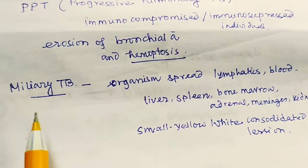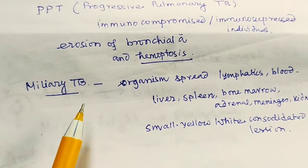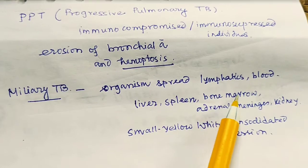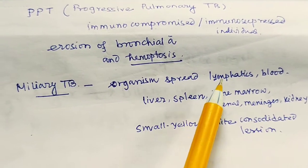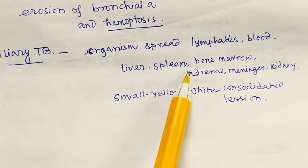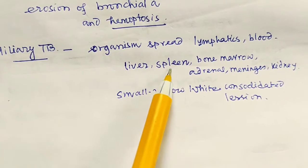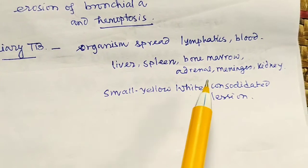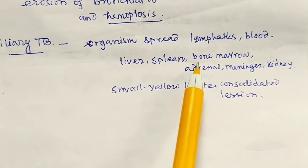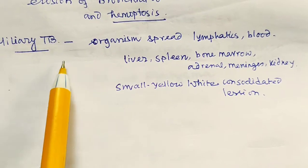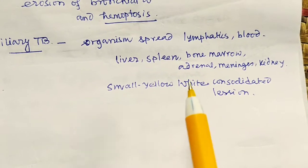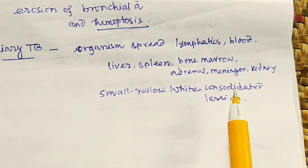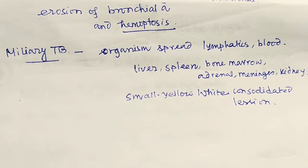Miliary TB gets its name because it looks like millet grains — small spots visible on chest X-ray. The organism spreads hematogenously via lymphatics and blood to other organs including the liver, spleen, bone marrow, adrenal gland, meninges, and kidney. The lesions are described as small yellowish-white consolidated lesions.